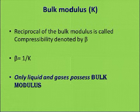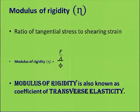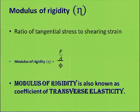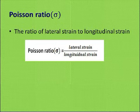Modulus of rigidity is denoted by eta, and it is the ratio of tangential stress to shearing strain. The formula is eta is equal to F upon A upon phi, where phi is the angle. Another name for modulus of rigidity is coefficient of transverse elasticity.